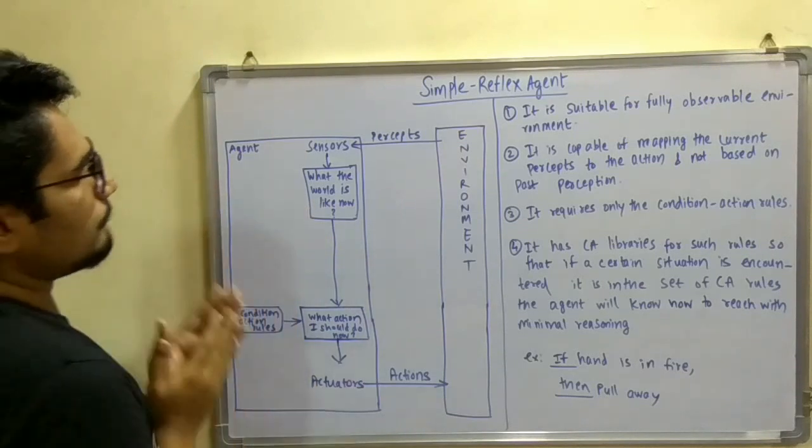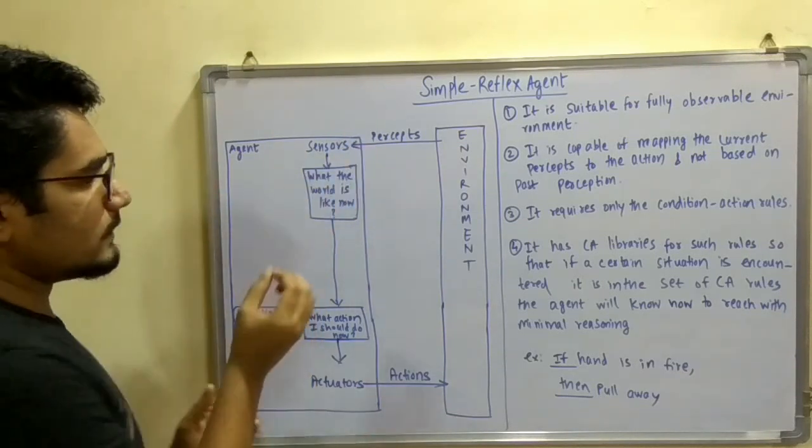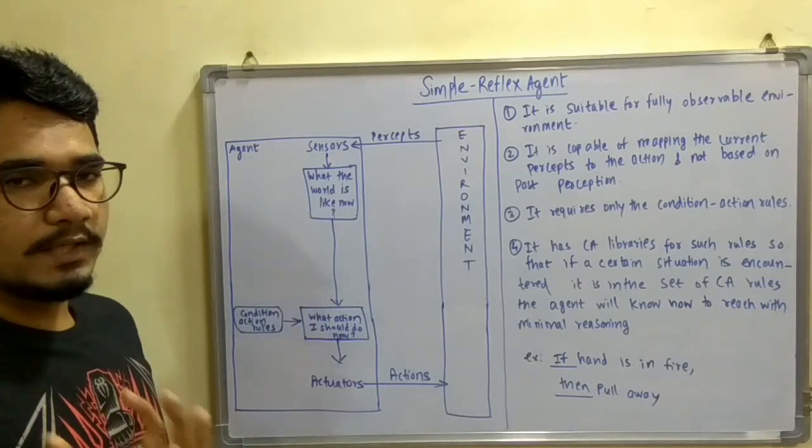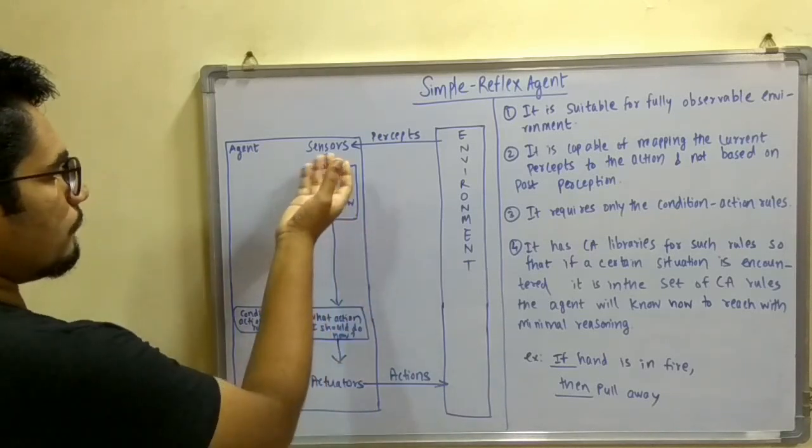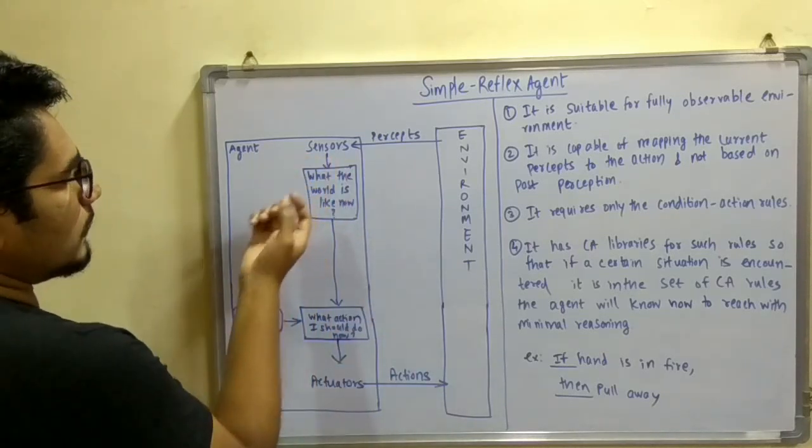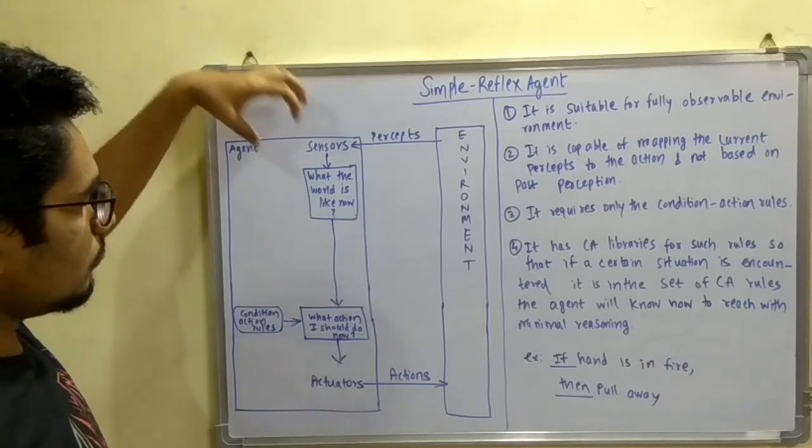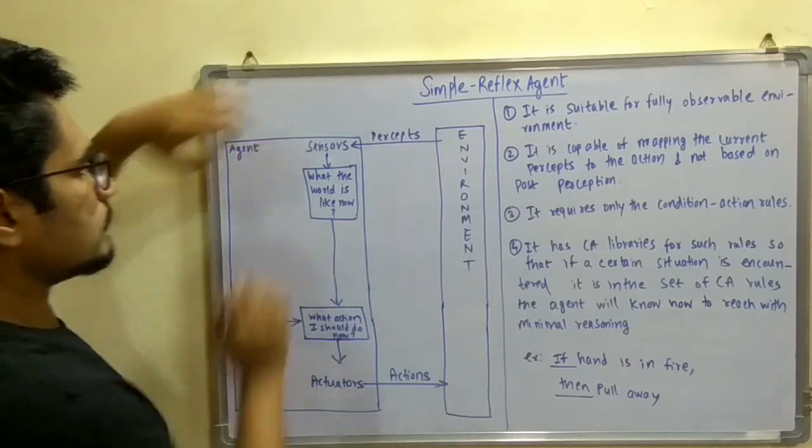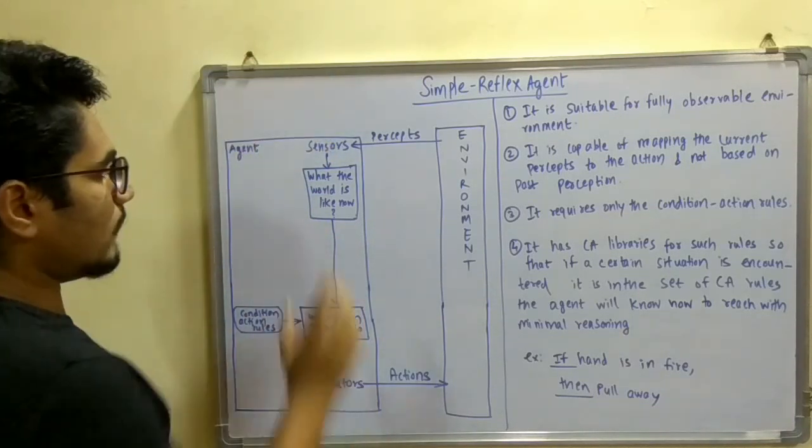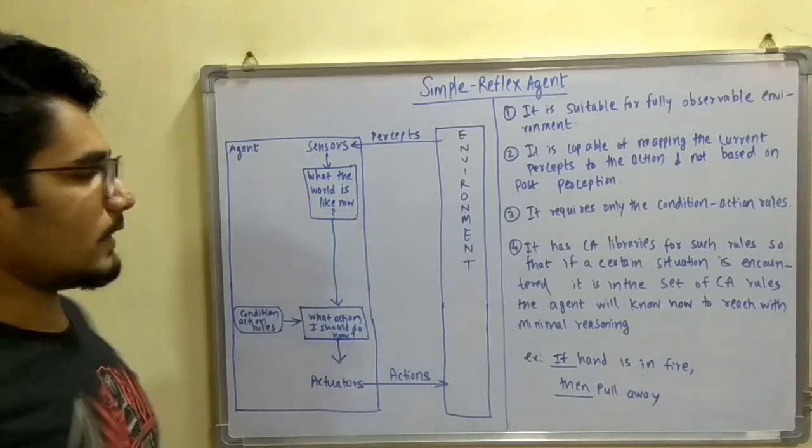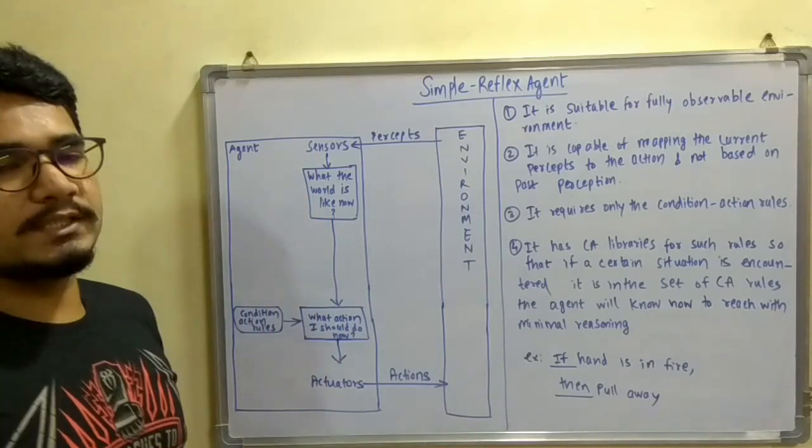So let us move on to the very first state. After getting some sense or after perceiving the environment from the sensors which it has, it will first feed those values to the first state. What the first state says is, what the world is like now.